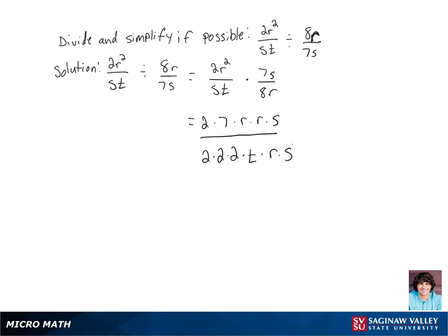So that we can do our simplifications. We can cancel an s, an r, and a 2 out of the numerator and the denominator. And we're left with 7 times r on the numerator and 2 times 2 times t on the denominator, which is 7r over 4t.